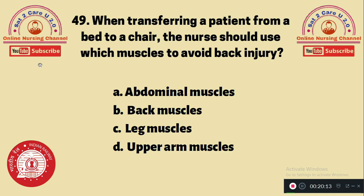Question 49: When transferring a patient from bed to a chair, the nurse should use which muscle to avoid back injury? A. Abdominal muscle, B. Back muscle, C. Leg muscle, D. Upper muscle. The leg muscle should be used, as it is stronger and better able to bear weight during transfer. The answer is C.